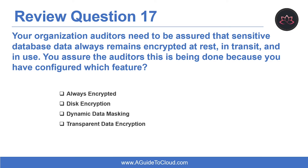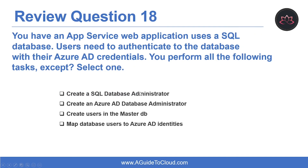Question seventeen: your auditors need assurance that sensitive database data always remains encrypted at rest, in transit, and in use. The feature you've configured is Always Encrypted. Always Encrypted helps protect sensitive data at rest on the server, during movement between client and server, and while the data is in use — ensuring sensitive data never appears as plain text inside the database system. Only client applications or app servers with access to the keys can access plain text data.